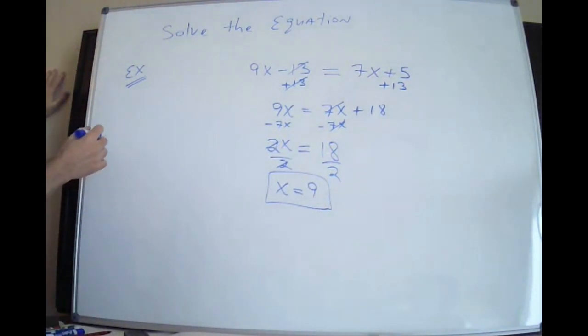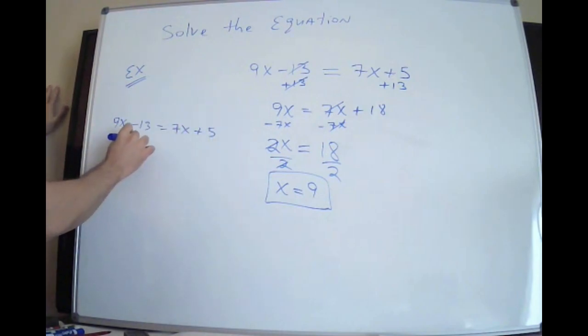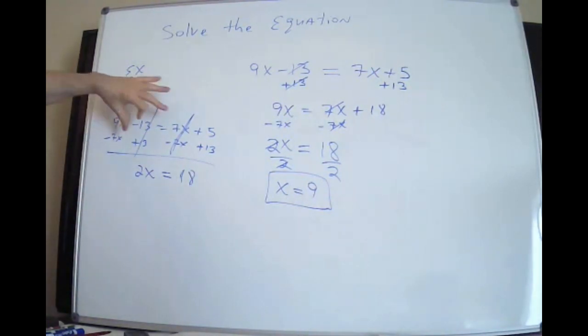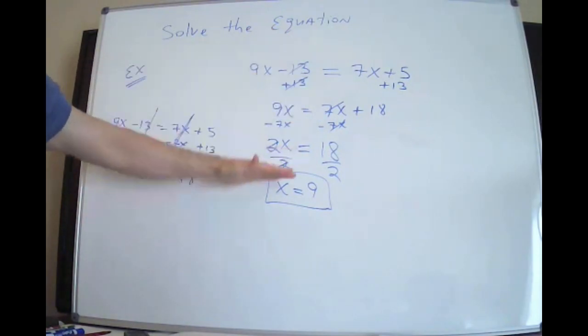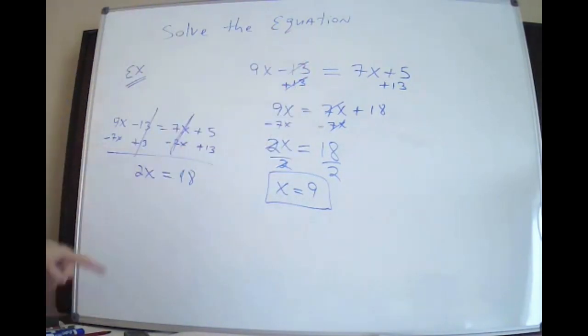Now, I do want to point out one thing. Could you have done this simultaneously? Absolutely. If you are comfortable with doing them together. So look, plus 13, plus 13. Cross out the dude that eliminates. Minus 7x, minus 7x. Cross out the dude that eliminates. And then in one step, you get to 2x equals 18. You can do it in one shot if you want. If you want to do them in two separate steps, cool. If you want to do it in one step simultaneously, cool. Either way, letter on the left, number on the right.